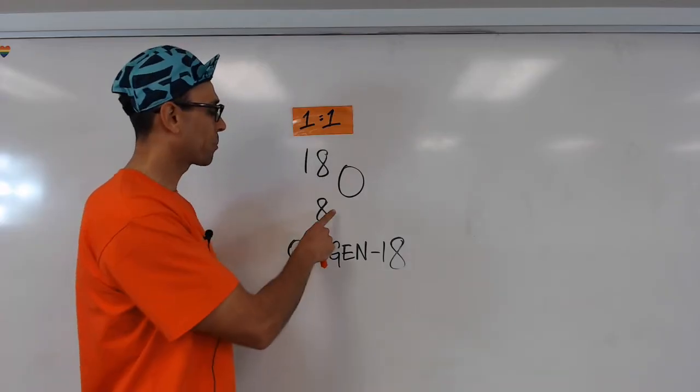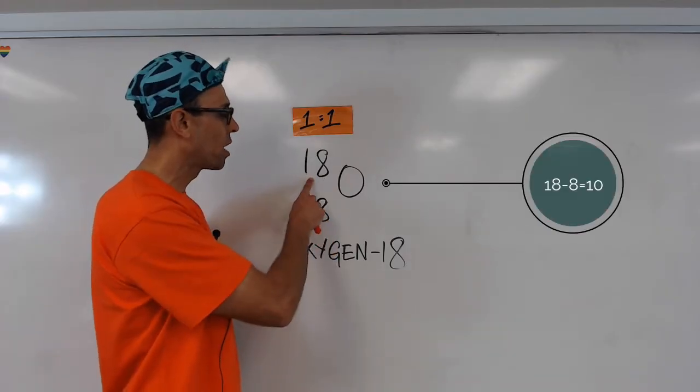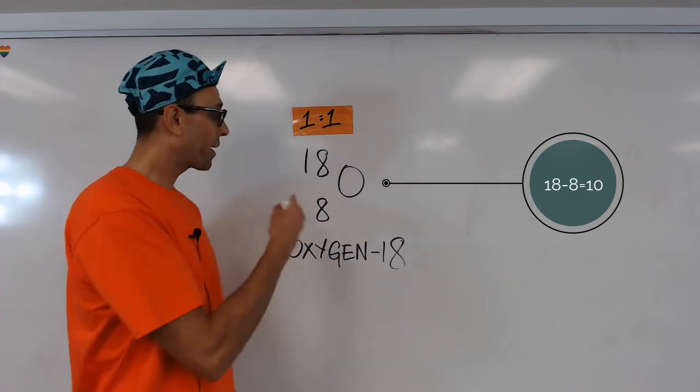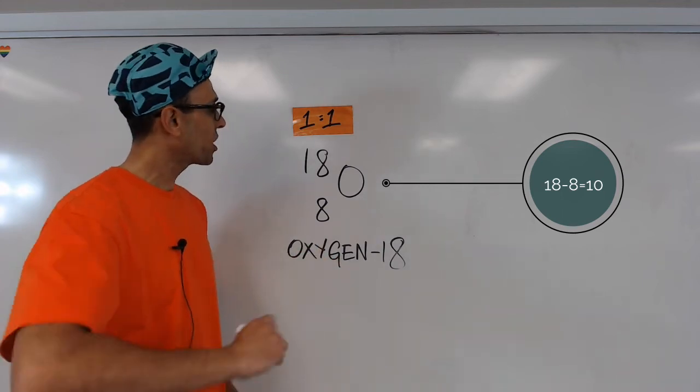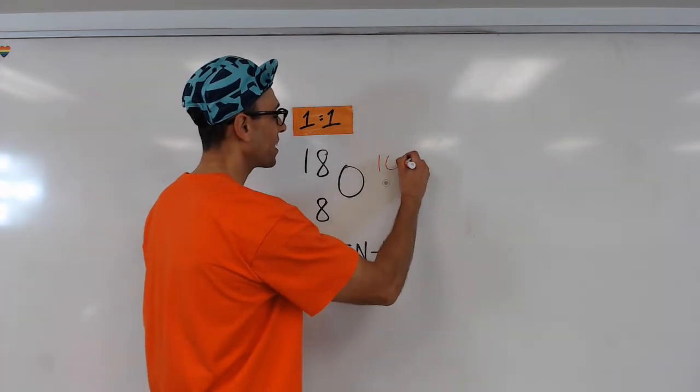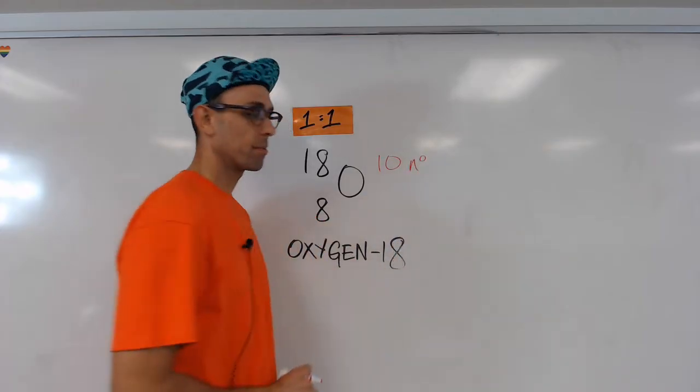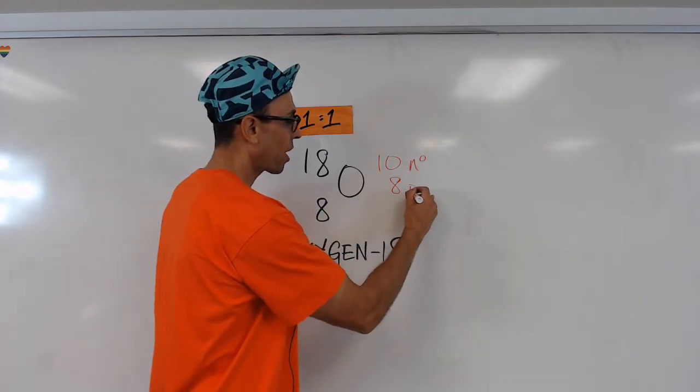In other words, we need to subtract our number of protons from the mass number. So by doing that, we see that this oxygen isotope has 10 neutrons. Now it has 8 protons.